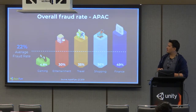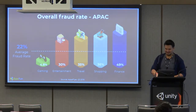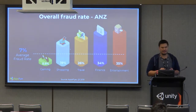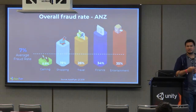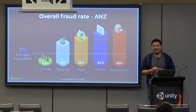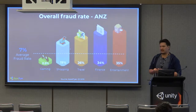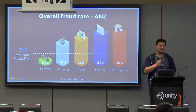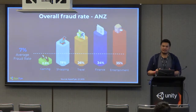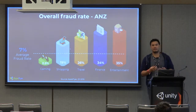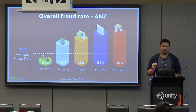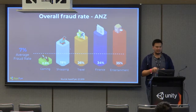For gaming, both in APAC and for users acquired in Australia and New Zealand, we tend to see the lowest amount of fraud. This is because of low CPIs for gaming. However, the volume for gaming is also much larger, and when acquiring users in high-growth markets like Singapore, Japan, or the US, that 0.5% to 5% of fraud can start eating up quite a large part of your budget — especially for hyper-casual games where every bit of margin matters.